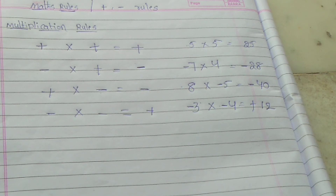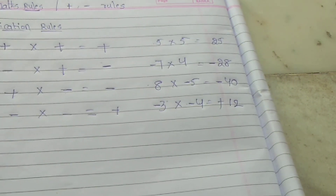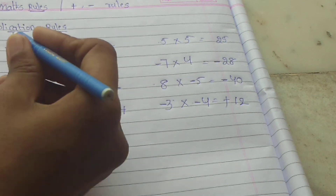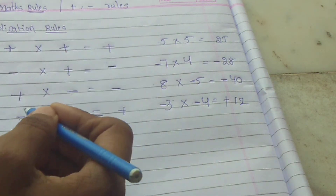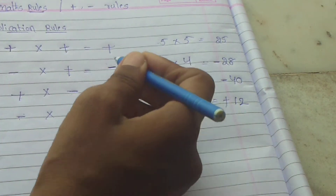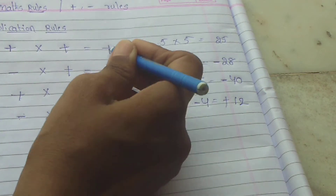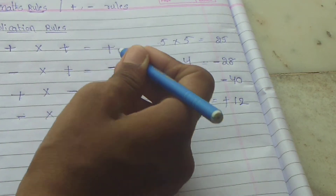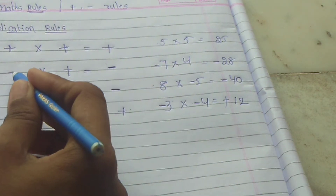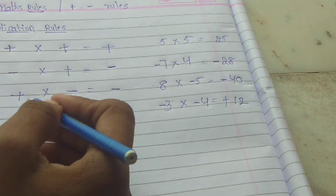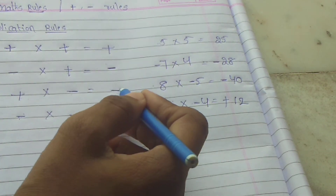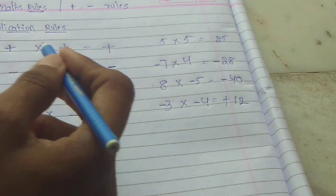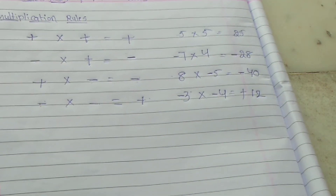These are the multiplication rules. The trick to remember: if the two symbols are the same — plus×plus or minus×minus — the answer is plus. If the symbols are different — minus×plus or plus×minus — the answer is minus.